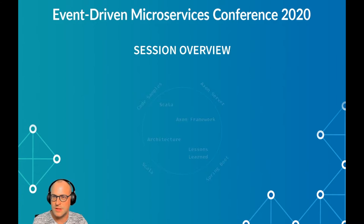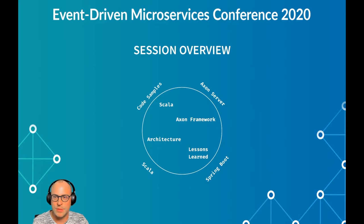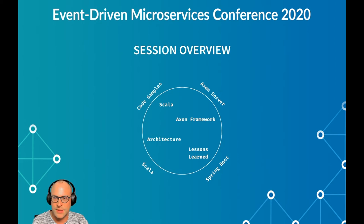Let's have a look at some of the things that are in this session and some that are not. Since this is a relatively short session, it's a good idea to know what you can expect. Obviously we're using Axon Framework. There's Scala here, which is both inside and outside of the circle — that's because we're using it as the main language, but I'm not talking about it today since I had a talk about that at Axon 2019. There will also not be any code samples today.